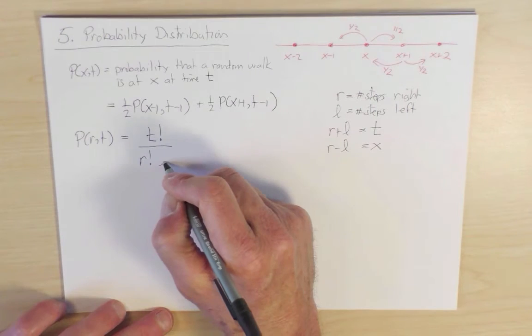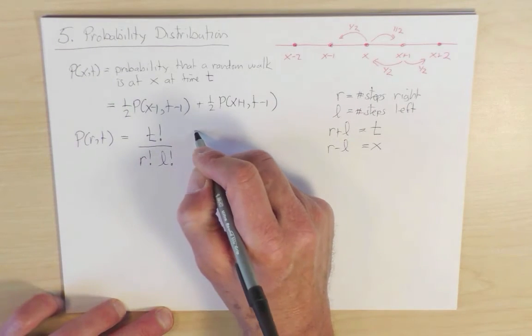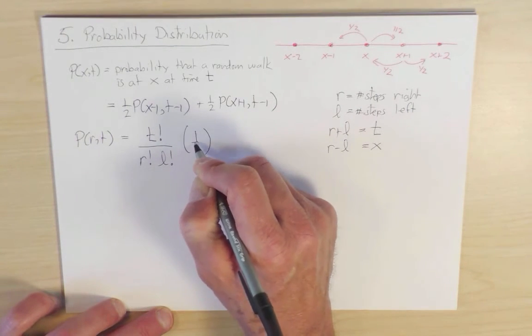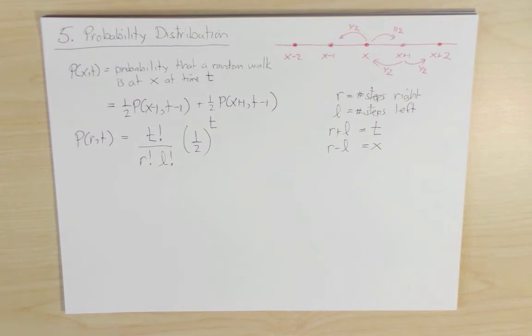And then we have a one half to the power t, because each step occurs with probability one half. So this quantity is precisely the probability that a random walker takes r steps to the right in a walk of a total of t, in a total of t steps.